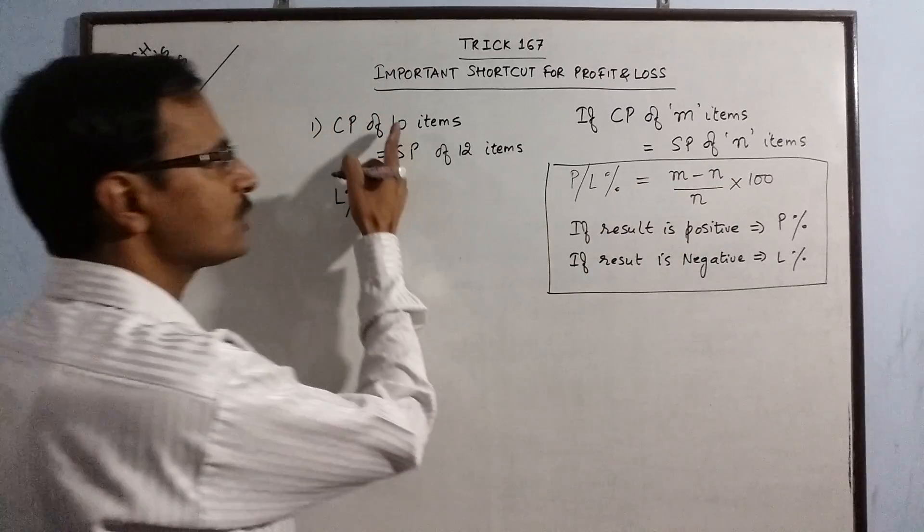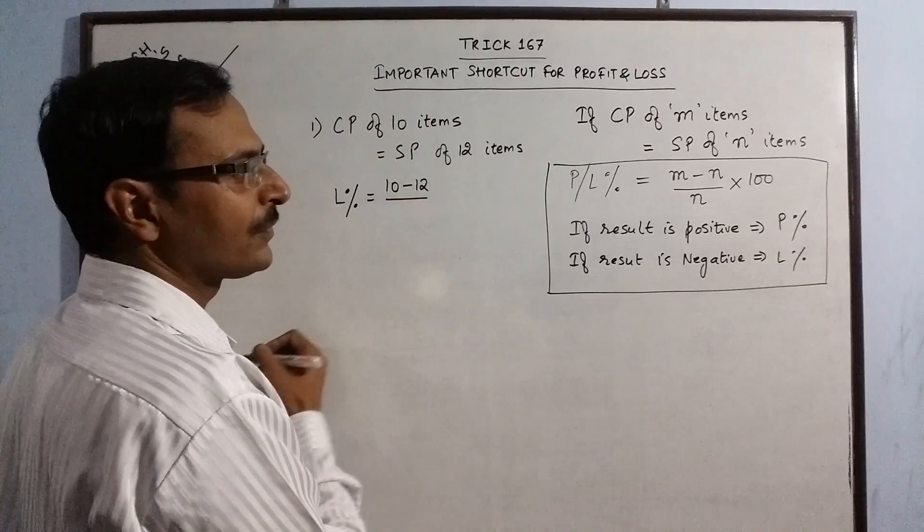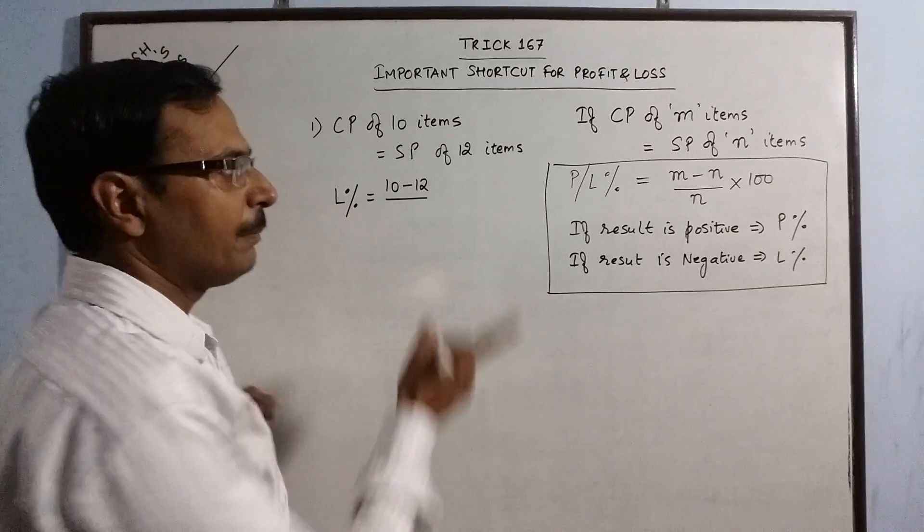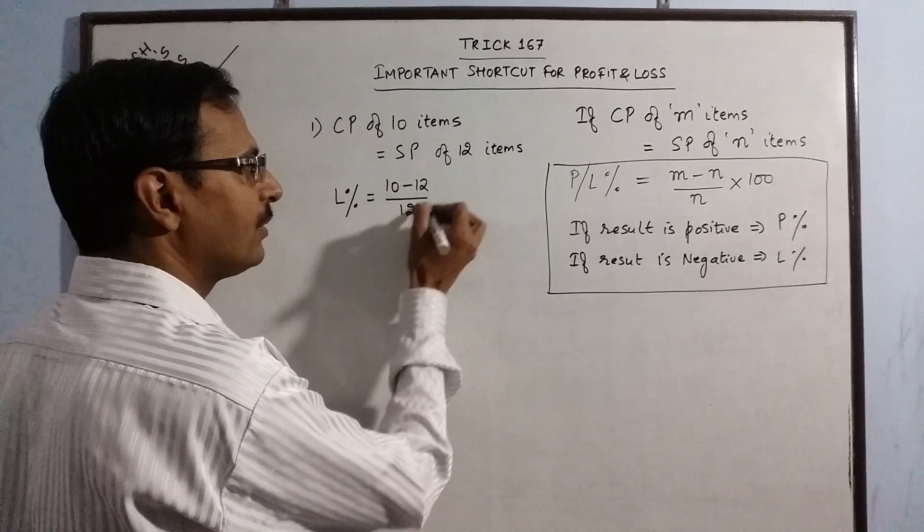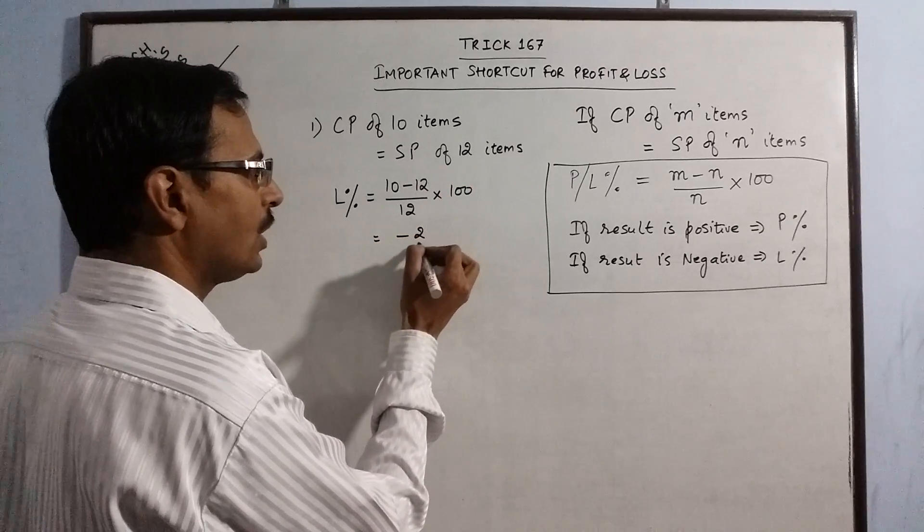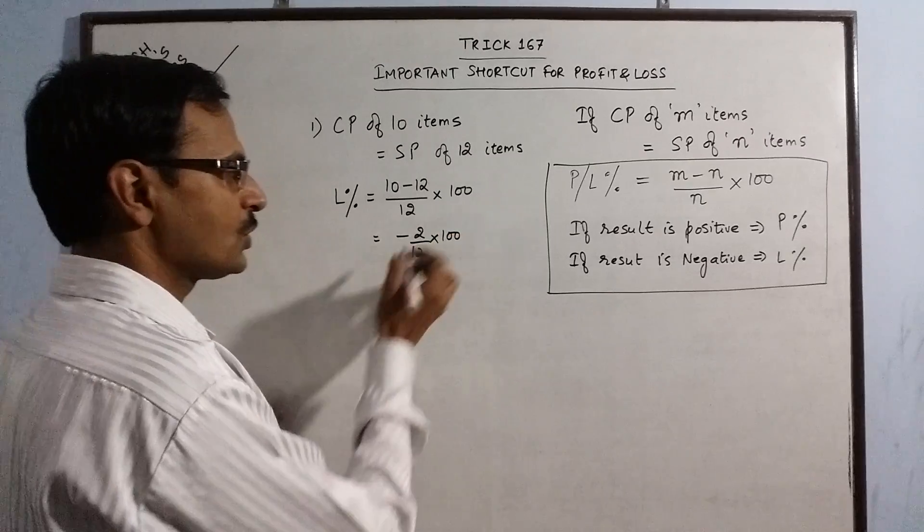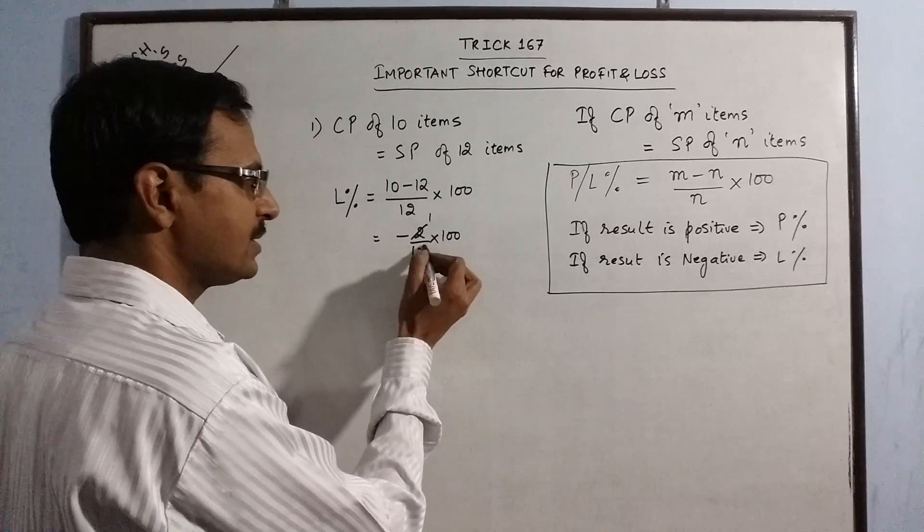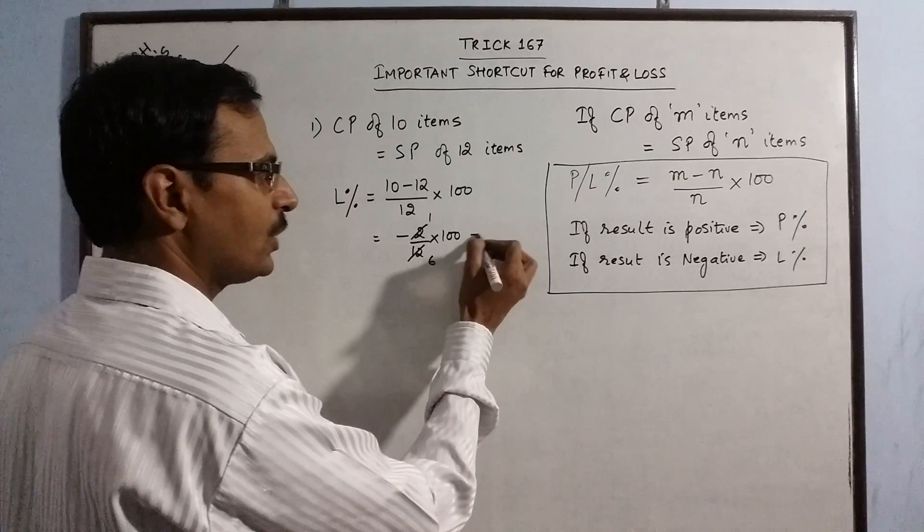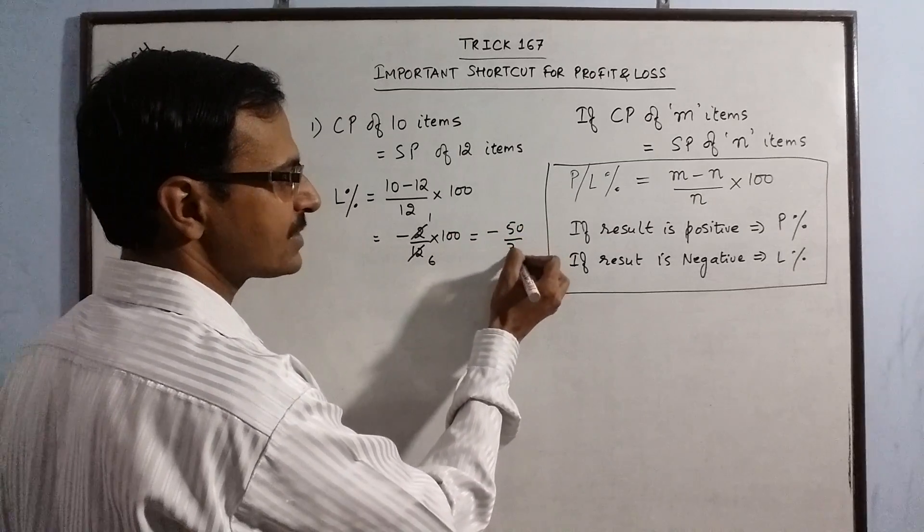So, what is the loss percent? We need to calculate that loss percent. See, this is the difference of m and n. So, 10 minus 12. Obviously, we will obtain negative sign here and we have to divide it by n. So, n is 12. Multiply by 100. So, we get minus 2 upon 12 into 100. So, you cancel this out by 6. Further, you can cancel by 2. So, minus 50 by 3 percent.